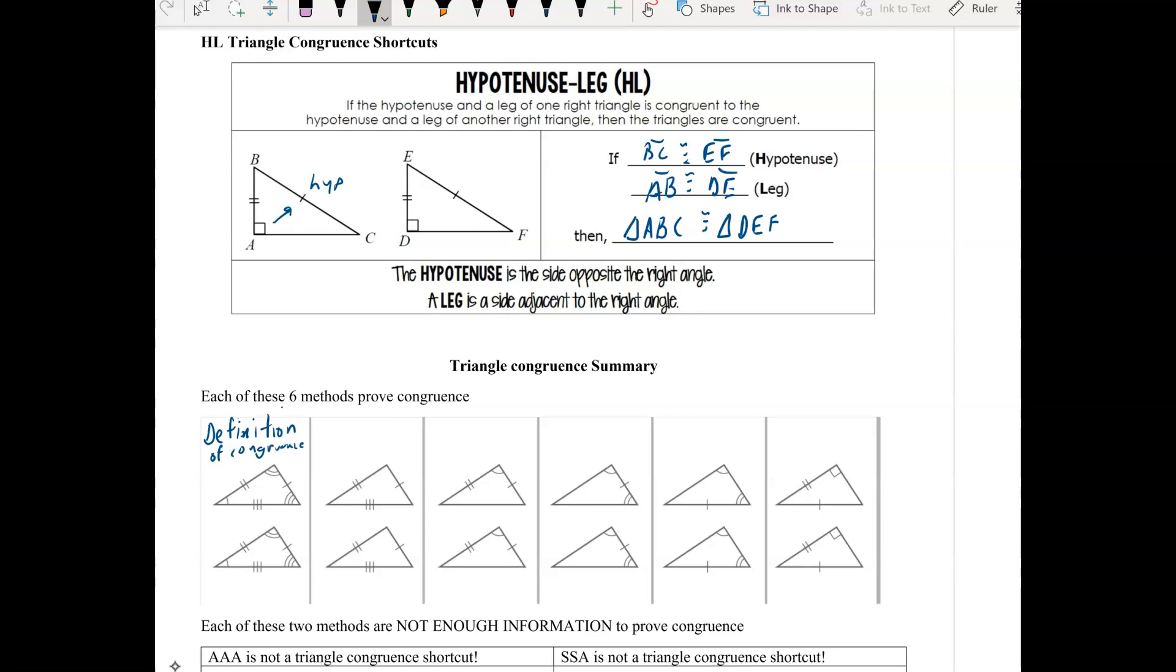The second one, side-side-side, the third one, we have side-angle-side, so that's SAS, the fourth one, two angles and then the non-included side, so that's AAS.